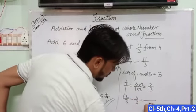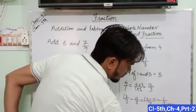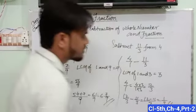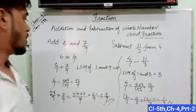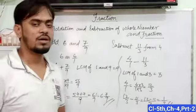So we have 12 upon 3 minus 11 upon 3. Both have the same denominator of 3. So write 12 minus 11, that means 1 upon 3 as an answer. So similarly you can solve your addition and subtraction of a whole number and a fraction.